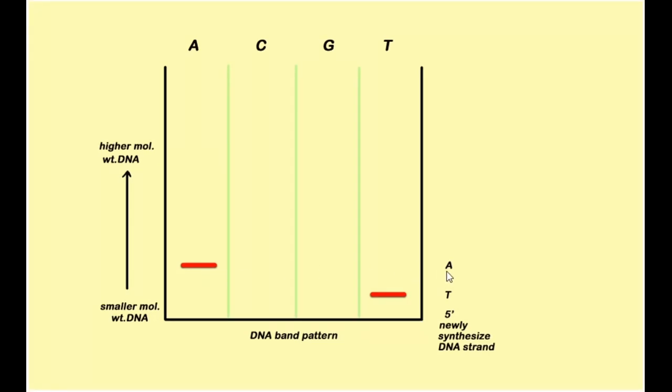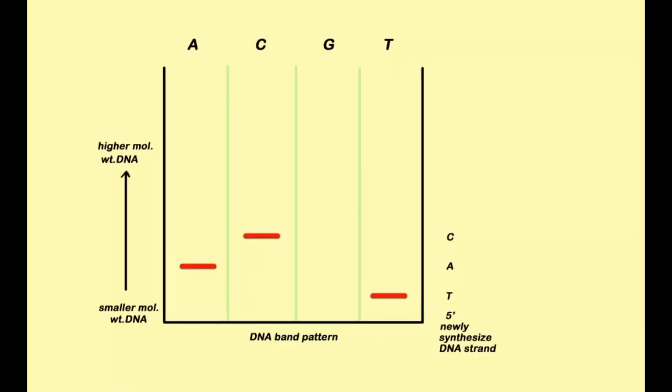The next band appears in the C reaction lane, hence can be detected as C. That's how all the bands will be detected and the sequence can be read as TACGTACG from 5' to 3'. But here one thing is to be remembered - this is the sequence of newly synthesized DNA and not of the sample. Therefore if you want to know the sequence of the sample, then find out the complementary sequence.